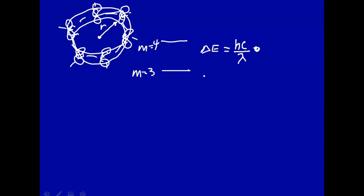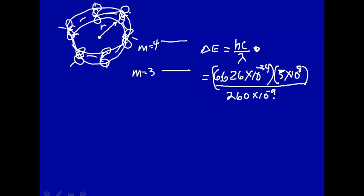So h, 6.626 times 10 to the minus 34. We'll put everything in SI units, so this will come out to be joules. C, 3 times 10 to the 8 meters per second, and lambda, given in the problem, is 260 times 10 to the minus 9 meters. So delta E that you measure experimentally is 7.65 times 10 to the minus 19 joules. That's that energy level gap, delta E, measured experimentally.